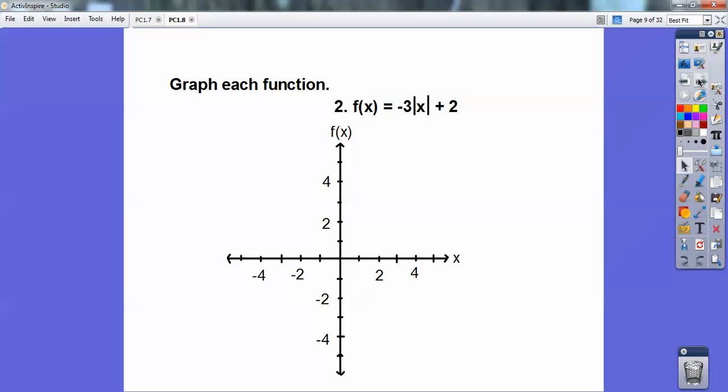This is an absolute value. It's opening down because that's negative. In fact, it's going down. When you go over 1, it goes down 3. And then my vertex is up here at that plus 2 right here. So it's going up here. And then over 1, down 3 on both sides. And it's a V-shaped graph, an absolute value.